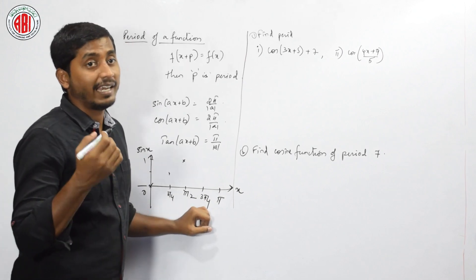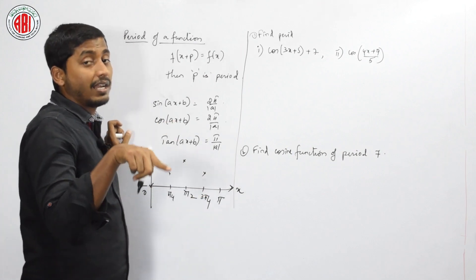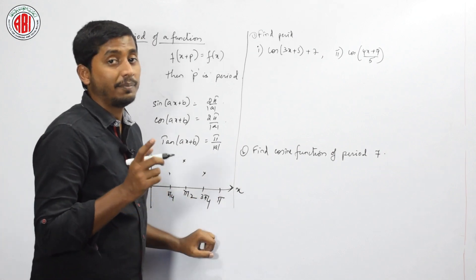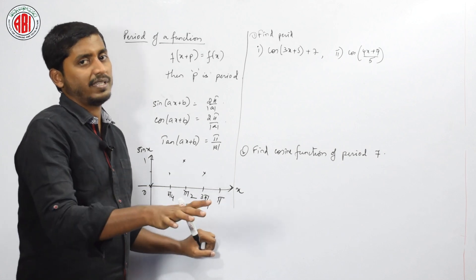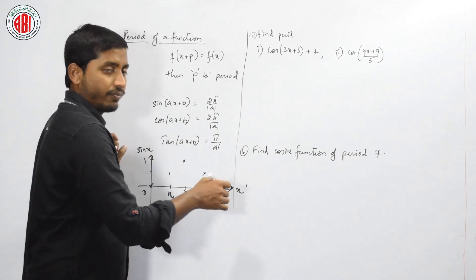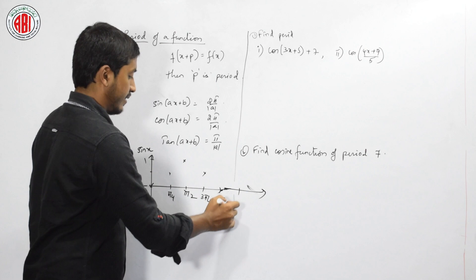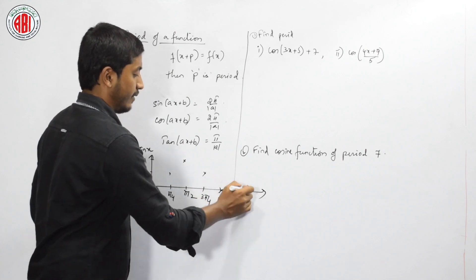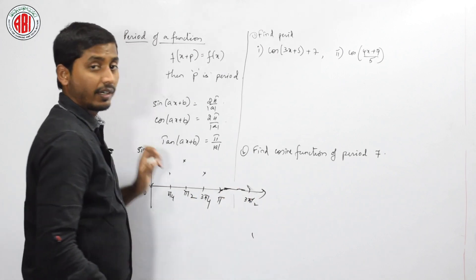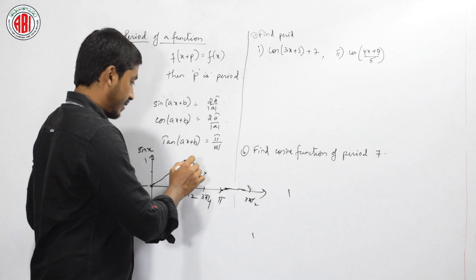Sin 3pi by 4, which is 90 plus 45, has value 1 by root 2 again. Since it is in the second quadrant, sin is again positive. Next, sin pi: 180 is 90 plus 90, assumed to be the second quadrant — it becomes cos 90, which is 0. Then at 3pi by 2, the value of sin is minus 1. After that, at 2pi, it forms the complete sin wave.